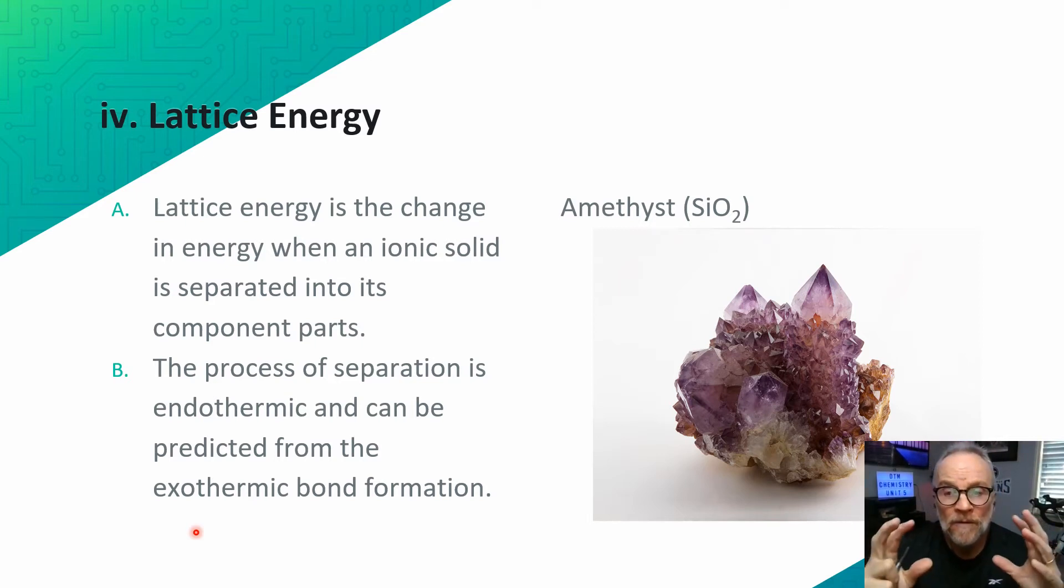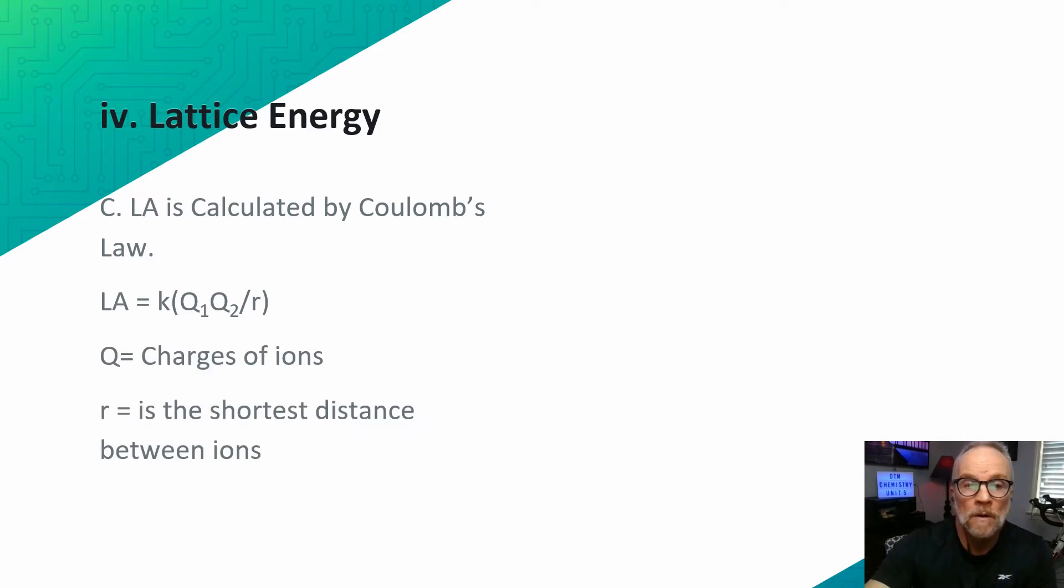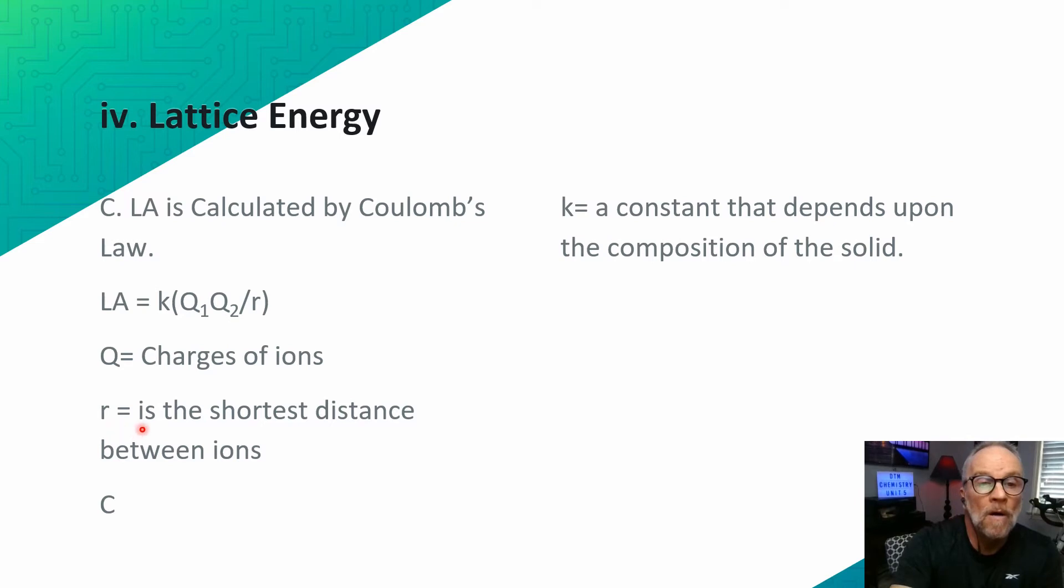When the lattice is formed, it's exothermic. But when you separate it out, it's endothermic. How much energy is released can predict how much will be absorbed when you need to break the bonds apart. Lattice energy is calculated by Coulomb's law. In Coulomb's law, r is the radius and that is the shortest distance between the ions. Q1 and Q2 are the charges of the ions. K is a constant that depends upon the composition of the solid.